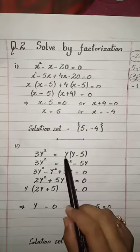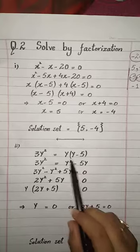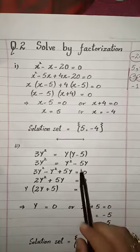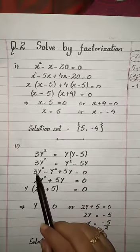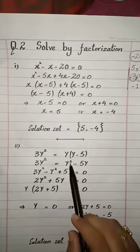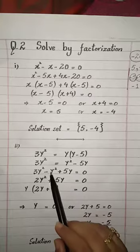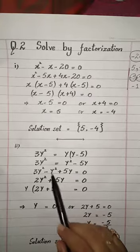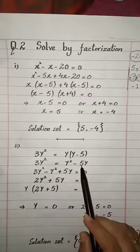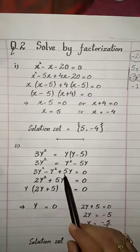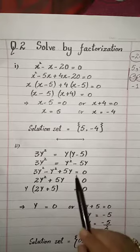First, open the bracket: y multiplied by y gives y², minus 5y. Now shift all the values to one side. 3y² here — y² is positive, so on the other side it will be negative: minus y². And 5y is negative on the other side it will be positive: plus 5y.